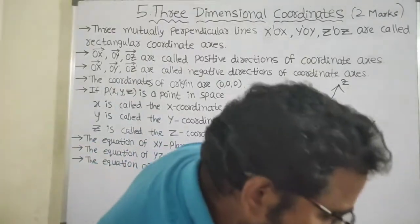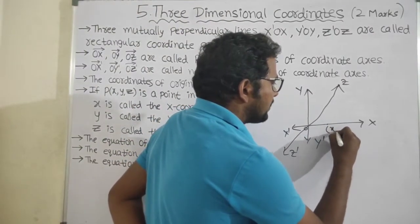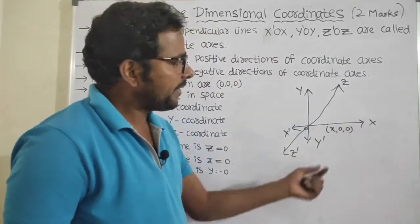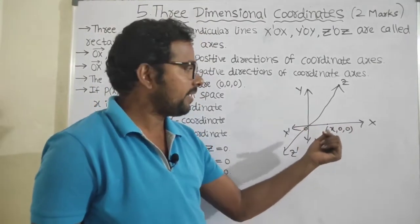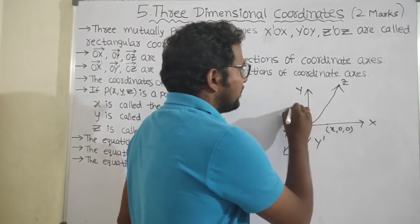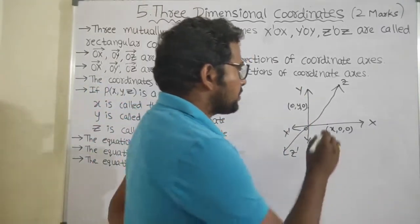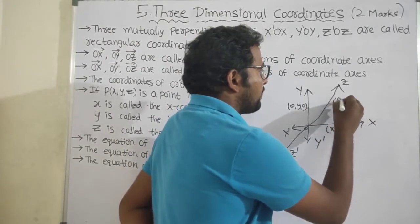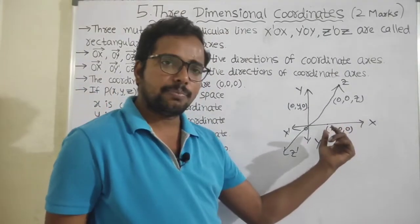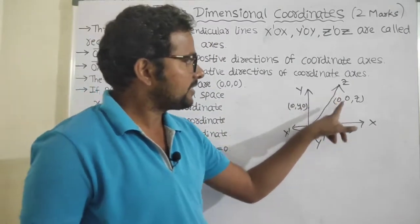If any point lies on the X-axis, the point is in the form (X, 0, 0) — same as in 2-dimensional coordinate axis. If any point lies on the Z-axis, that point is in the form (0, 0, Z). If any point lies on the X-axis it is (X, 0, 0); on the Y-axis it is (0, Y, 0); and on the Z-axis it is (0, 0, Z).